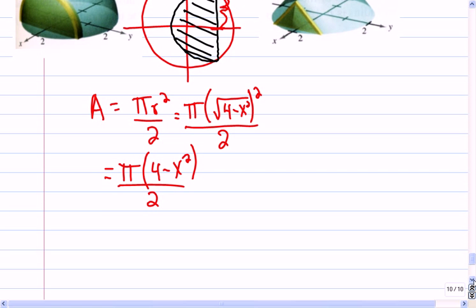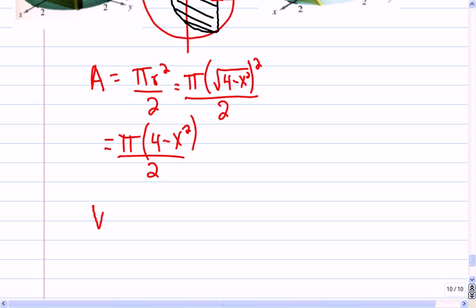And we have the same bounds. So the volume for this figure is negative 2 to 2 of pi. Well, I guess I can, let's take the constant out front. I can put pi over 2 here. And then I can go 4 minus x squared dx here. Okay, so that would add up all the slices.